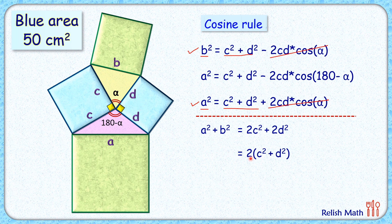So replacing this with 50, which is given in the question, so a squared plus b squared is 2 times 50, or 100. And a squared plus b squared, that's what is the area of the green squares.